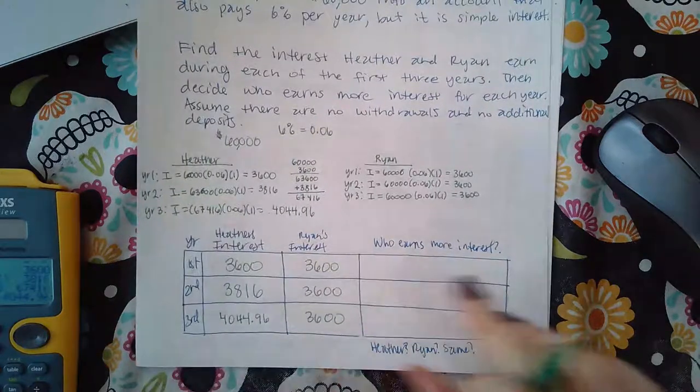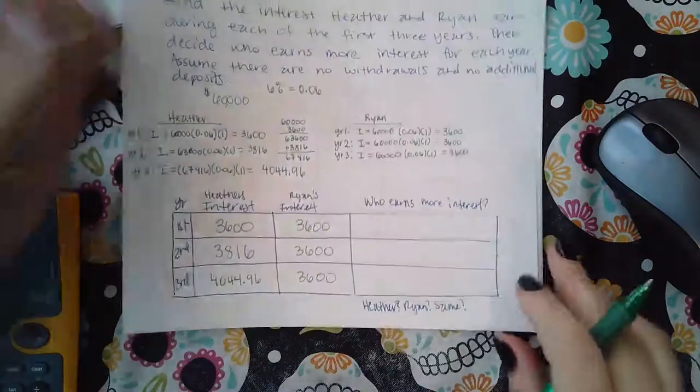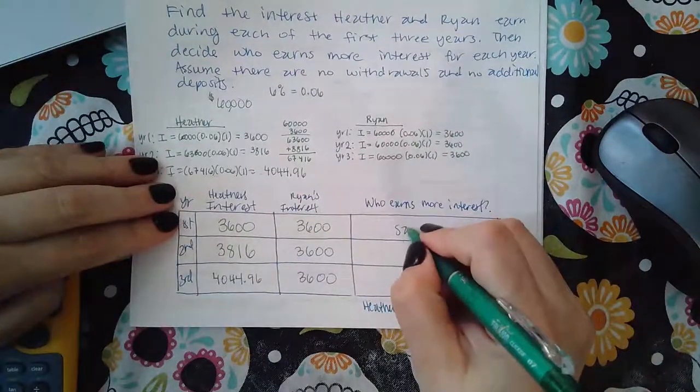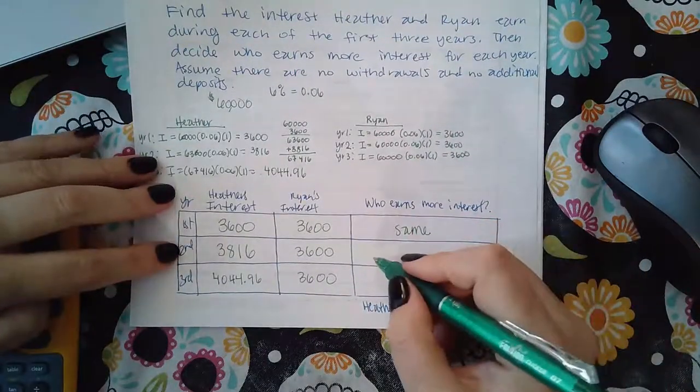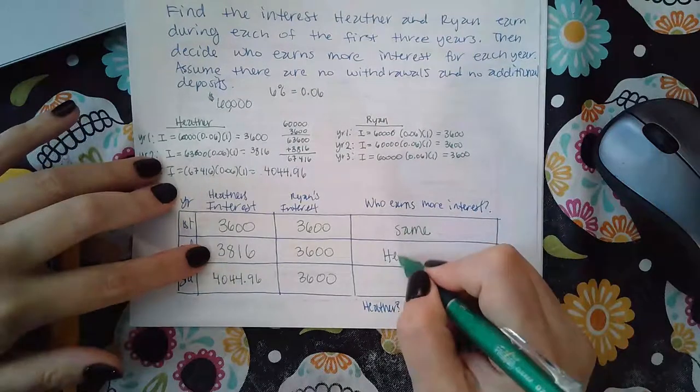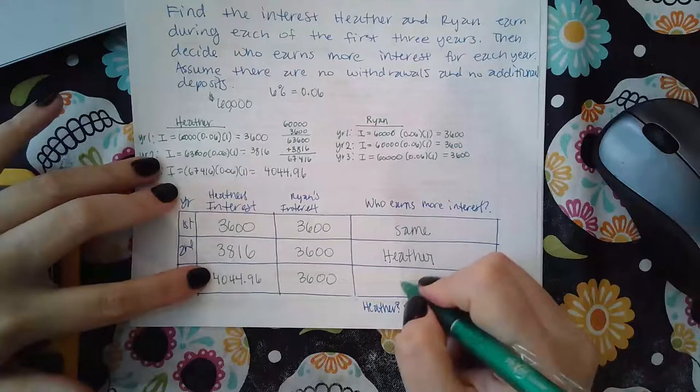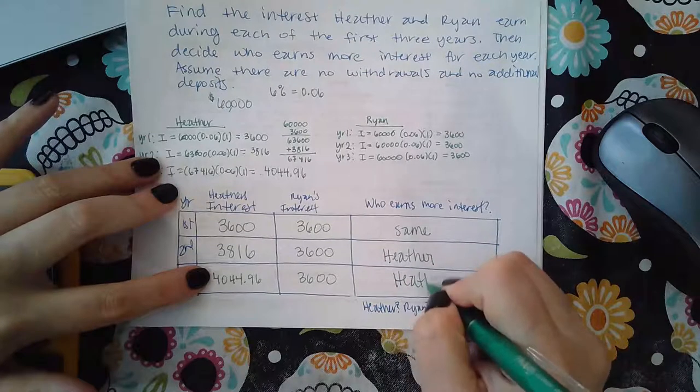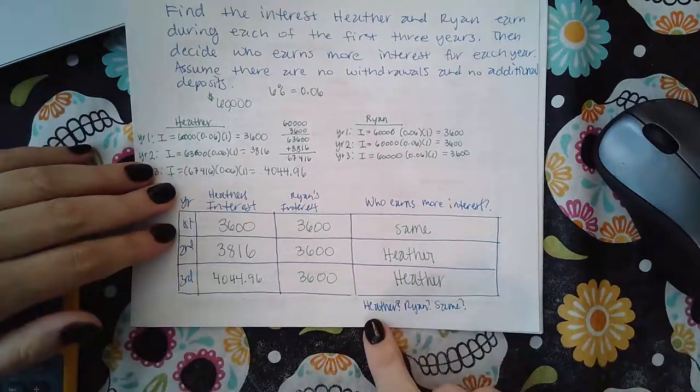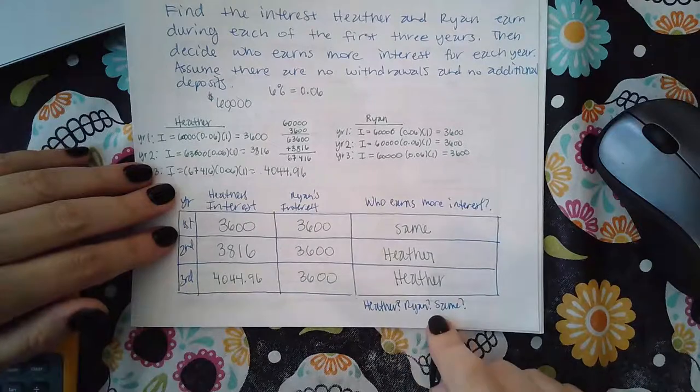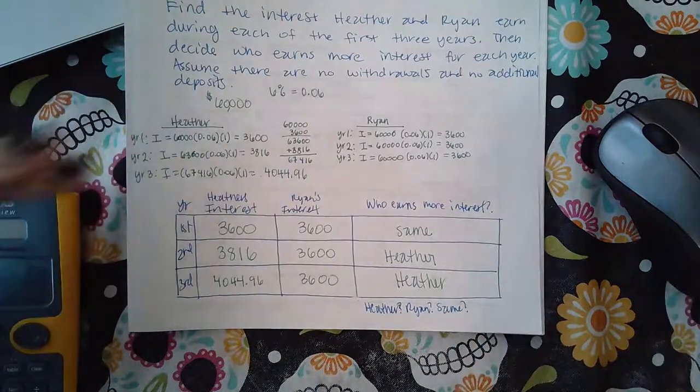And so then it asks you who earned more. In the first year it's the same. For the second year it's actually Heather that earned more, and then for the third year it's actually Heather that earned more again. And so your answers will either be Heather, Ryan, or the same. It'll be a drop-down arrow inside ALEKS.